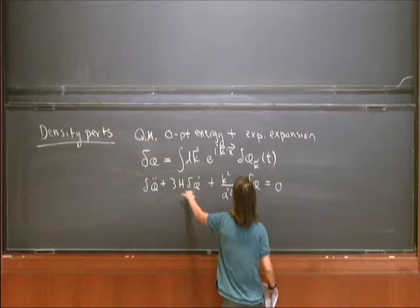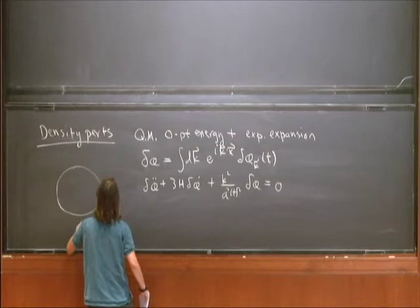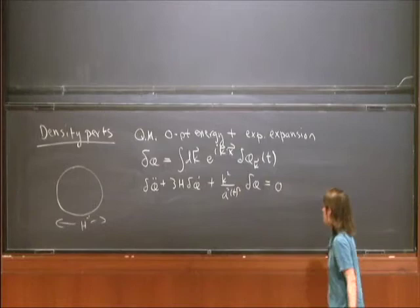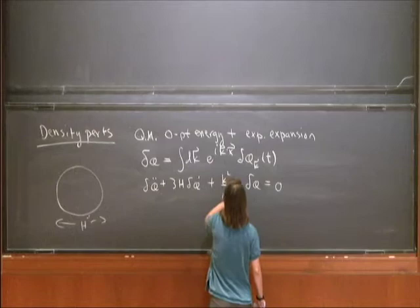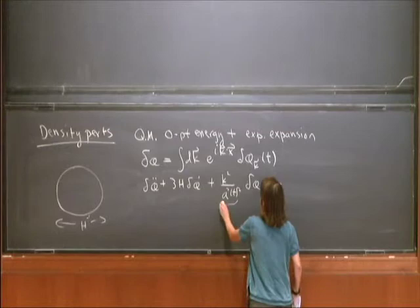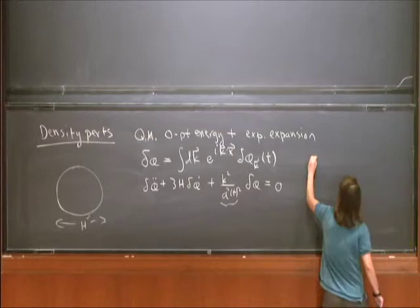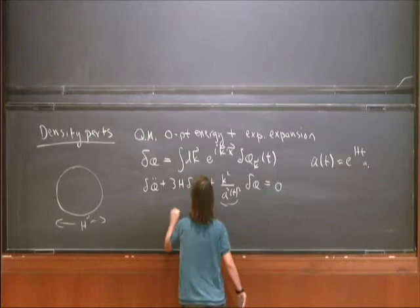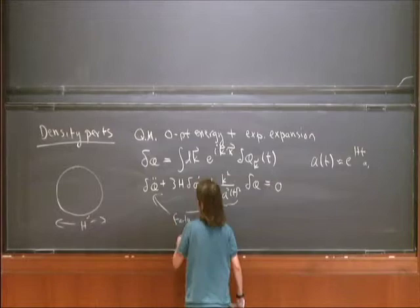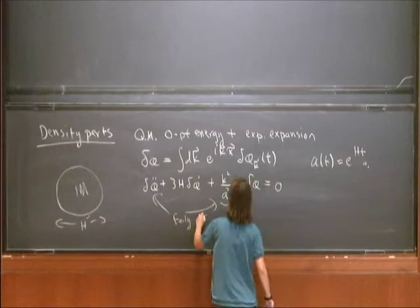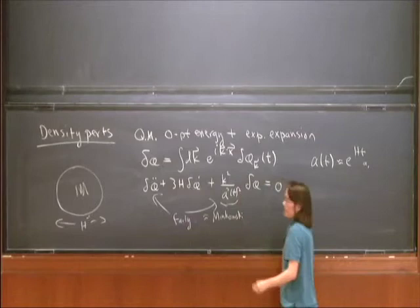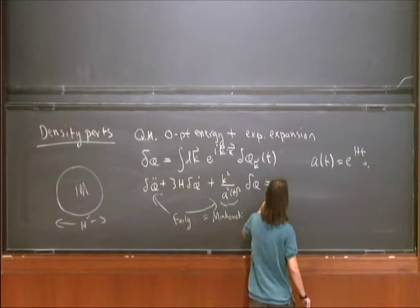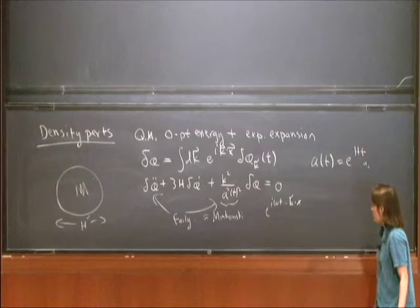From this equation we can see a couple of things. First, if we look at a patch of size of the inverse Hubble rate — which is approximately constant during inflation — and consider two regimes: at early times, A of T gets very small, so this term dominates. We are well within the Hubble patch and might as well be in Minkowski space. So these modes are approximately ordinary flat-space Fourier modes.